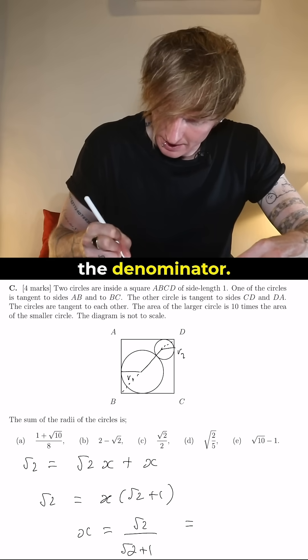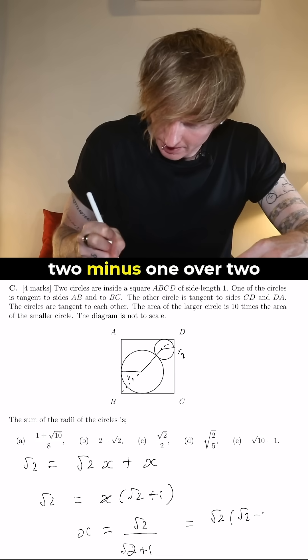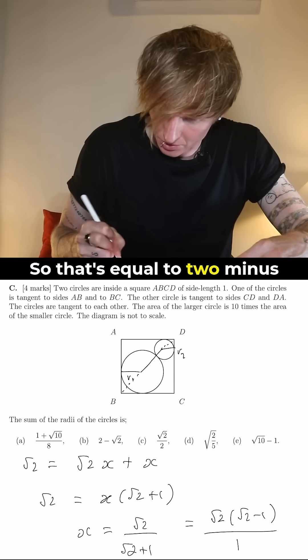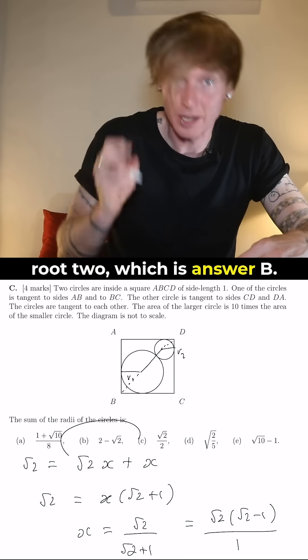I've got to rationalize the denominator. So that's root 2 times root 2 minus 1 over 2 minus 1 over 1. So that's equal to 2 minus root 2, which is answer B.